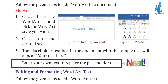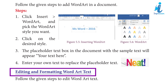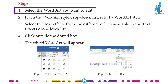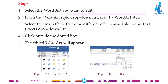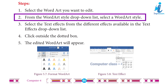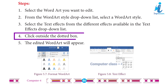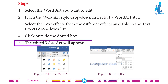Step 4: Enter your own text to replace the placeholder text. To edit and format WordArt text: Step 1: Select the WordArt you want to edit. Step 2: From the WordArt style drop-down list, select a WordArt style. Step 3: Select text effects from the different options available in the Text Effects drop-down list. Step 4: Click outside the dotted box. Step 5: The edited WordArt will appear.